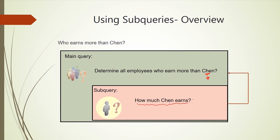That salary is then used by the main query to identify all employees who earn more than Chin. For example, if Chin earns 2000, it returns all employees who earn more than 2000. This is the idea of a subquery: a subquery is a query within another main query, or within an outer query.